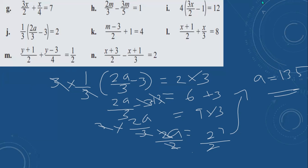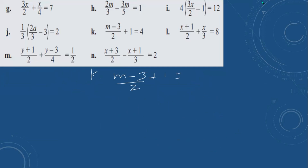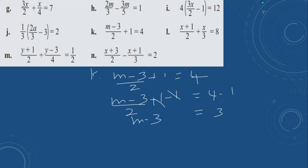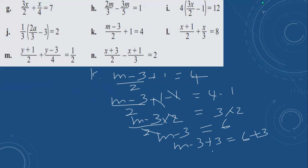Then problem k: (m minus 3) over 2 plus 1 equals 4. First remove plus 1 by doing minus 1 on both sides. 4 minus 1 is 3. These cancel. (m minus 3) over 2 equals 3. Multiply by 2. 2 and 2 cancel. m minus 3 equals 6. Do the opposite: plus 3 on both sides. 6 plus 3 is 9. m is equal to 9.